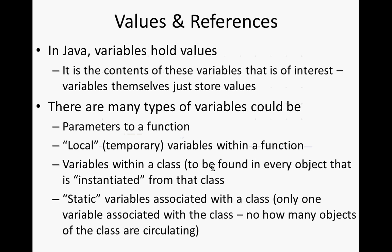When we have references — references to color, to date, or to person — the value actually points to something, it actually refers to a certain object. Or it can refer to something called null, which means it refers to nothing, no particular object. It doesn't point to any legitimate object.